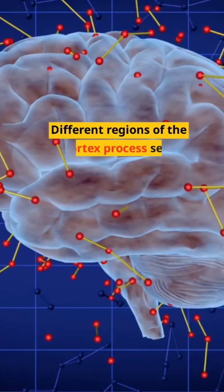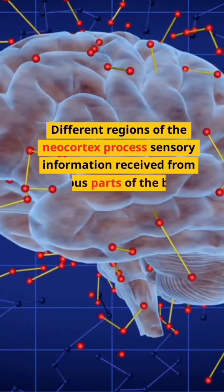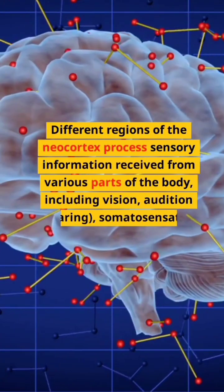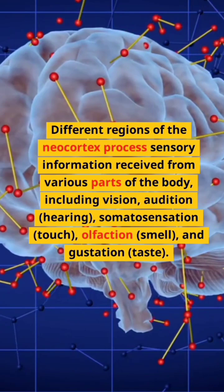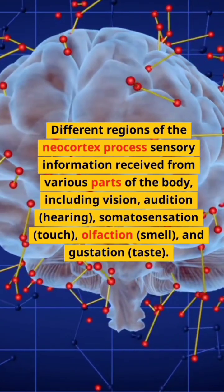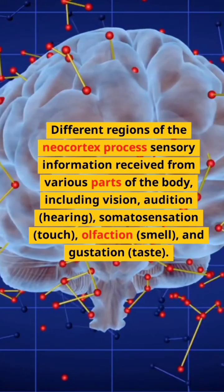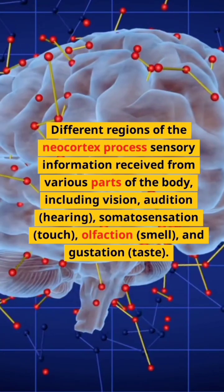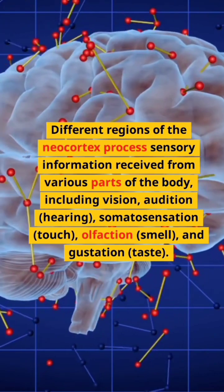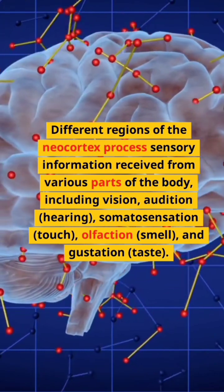Different regions of the neocortex process sensory information received from various parts of the body, including vision, audition (hearing), somatosensation (touch), olfaction (smell), and gustation (taste).